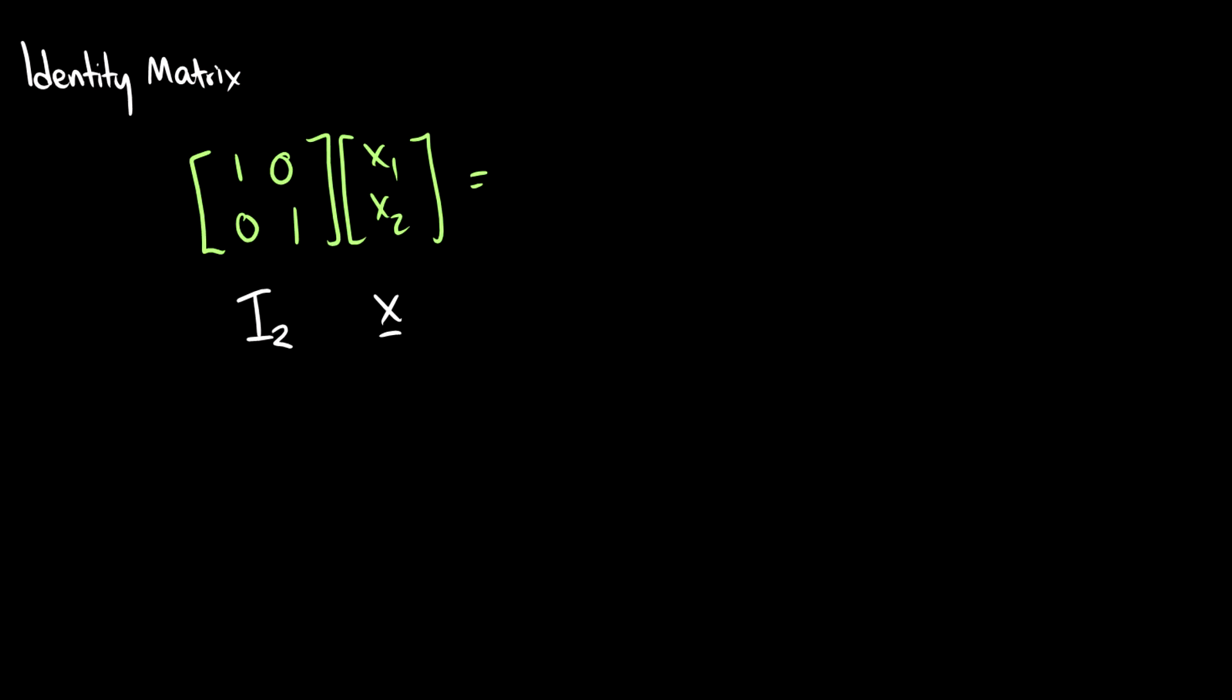I'll use that concept to show you what an identity matrix does. What is an identity matrix? Well, it looks like [1, 0; 0, 1]. Let's use the method of dot products and figure out what result we get. Remember we multiply row by column. Our first is 1*x1 plus 0*x2. What is the result? Well, this is x1 and x2.